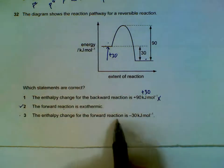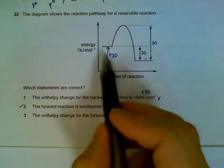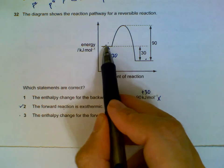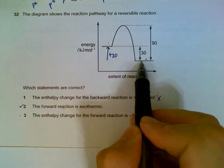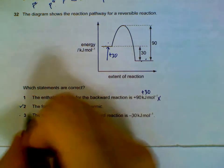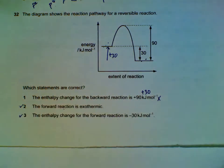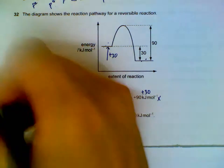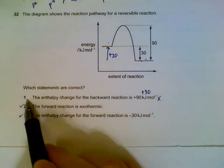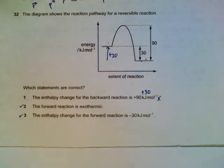Enthalpy change for the forward reaction is minus 30. To go from this side and end up at this level, you have to drop by 30, so enthalpy change for the forward reaction is minus 30. If you already figured out statement 1 is wrong, it must be combination of 2 and 3 should be correct.